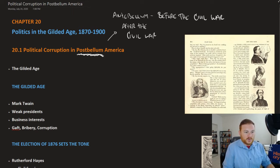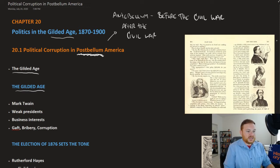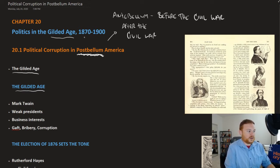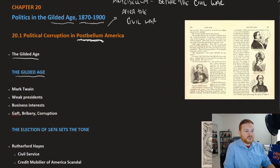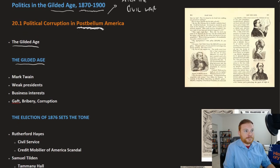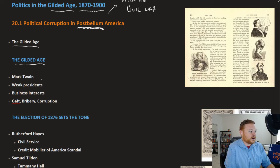We've already come across the term Gilded Age, but in Chapter 20 it is formally introduced. The Gilded Age was a term used to describe this particular period in American history, 1870 to 1900. It was actually the title of a book which made fun of the political corruption that characterized the era, and it was created by Mark Twain — Mark Twain coined the term Gilded Age.